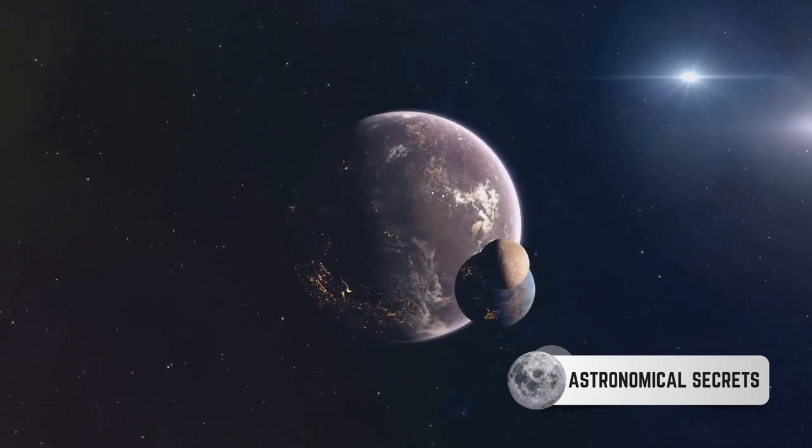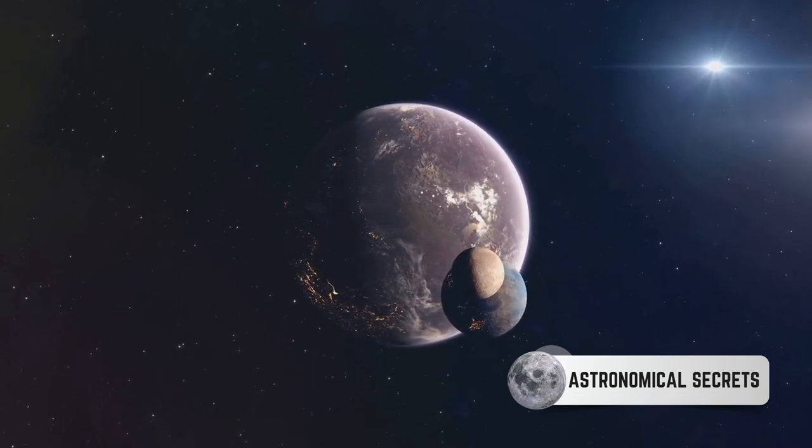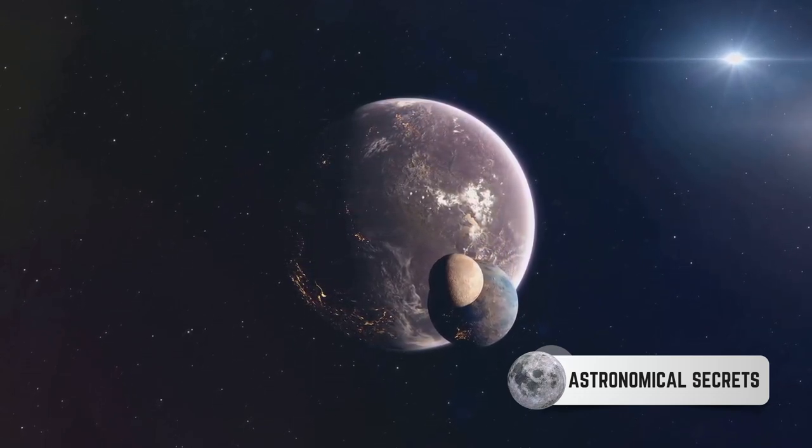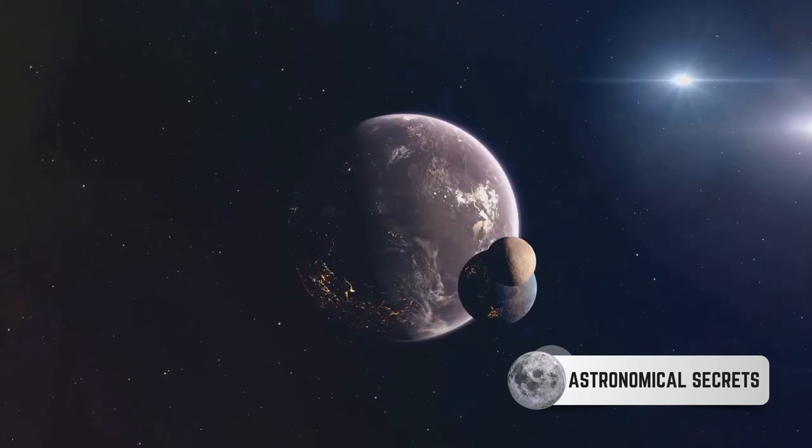Next is Kepler 442b, a super-Earth located in the habitable zone of a sun-like star. Scientists believe it has a 60% chance of being rocky like our home planet, making it another exciting prospect.